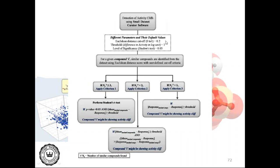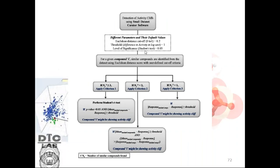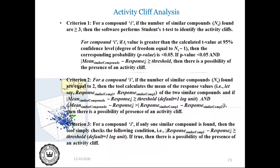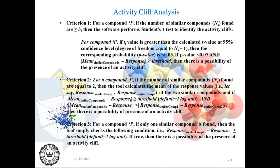Activity cliff analysis identifies two compounds having similar structure but quite different activity, which will be difficult to model. There should be some way to identify these. The strategy for determination of activity cliffs depends on the number of similar compounds: if the number of similar compounds is 3 or more, one criteria applies; if it is 2, another criteria; and if it is 1, yet another criteria.